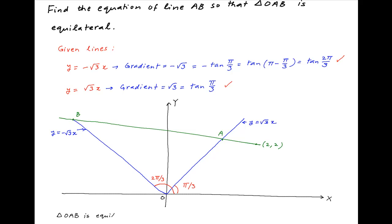O is the origin and we are given that triangle OAB is equilateral, which means that the angles of this triangle are all equal to π/3.